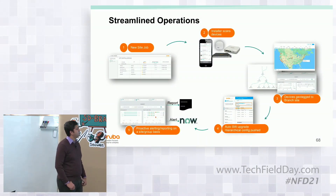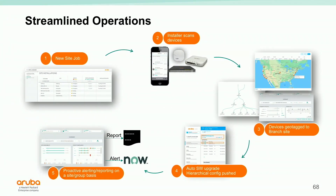The way we're doing this — and you're going to see it in action — is that first of all, the project manager, not necessarily the network engineer who knows all the details about the project, logs into Central. Central has role-based access, and we can expose buttons here and there quite easily. So you log into Central and you have a set of sites that you're going to deploy.